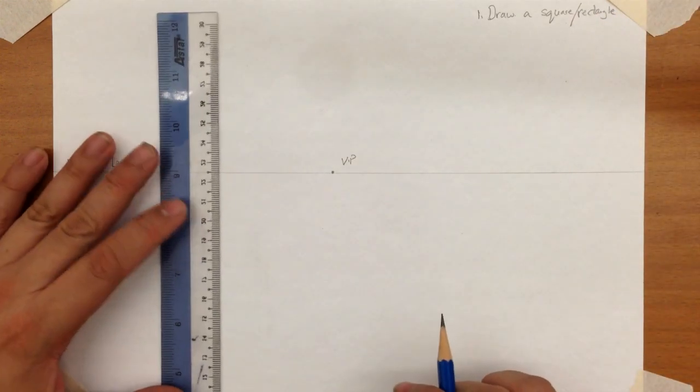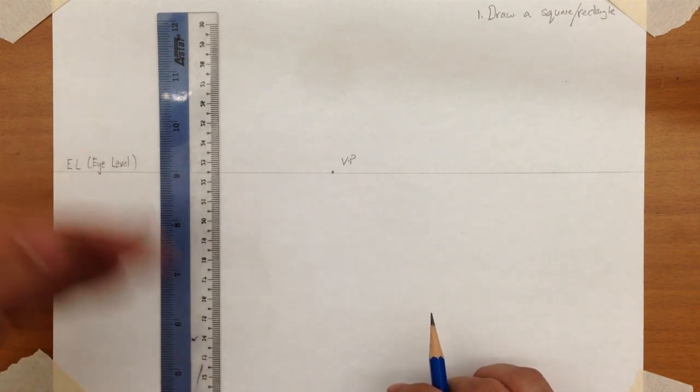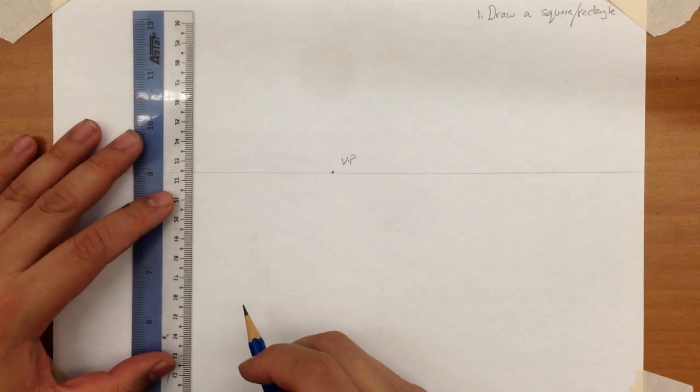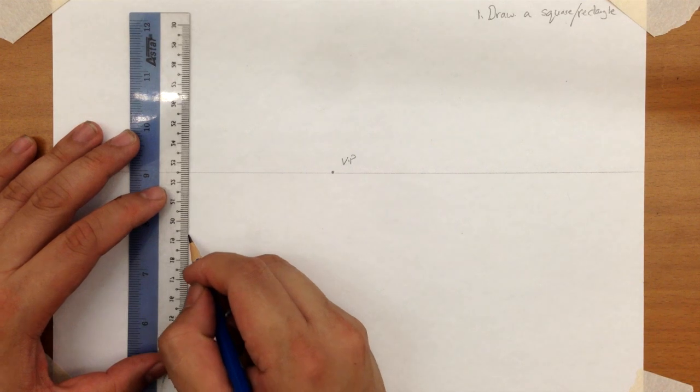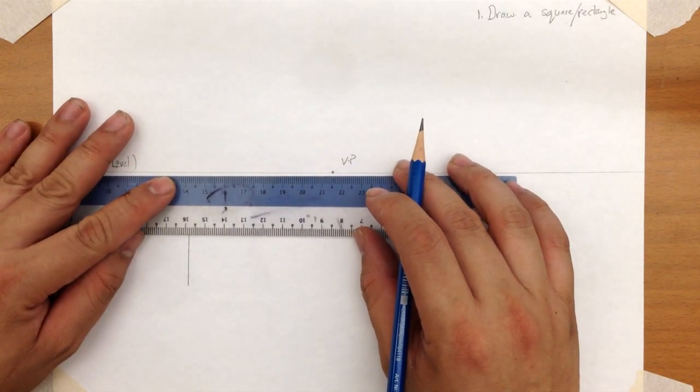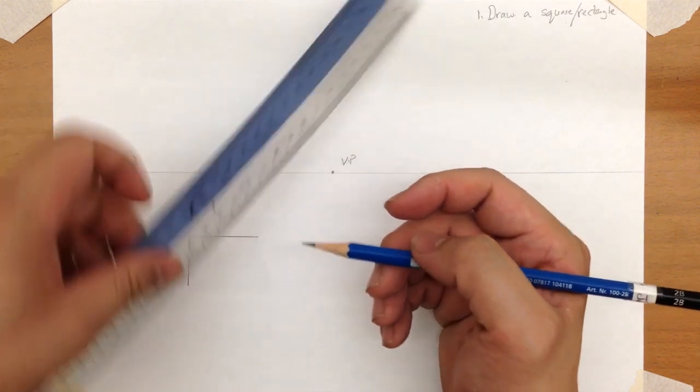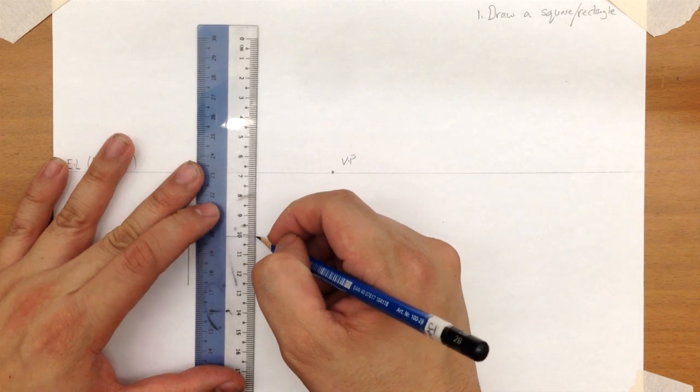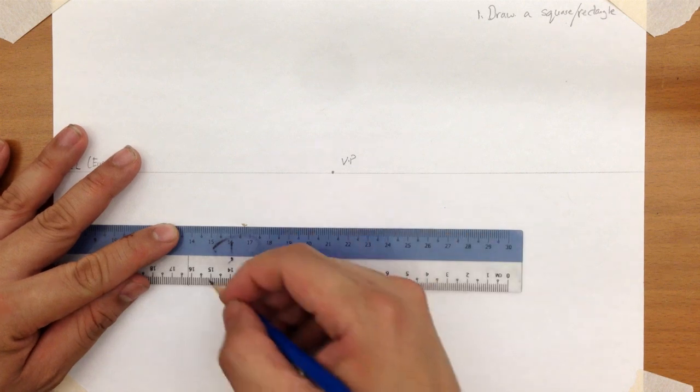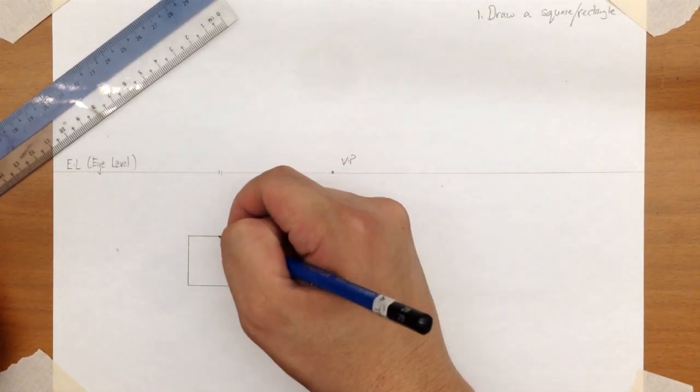So when you draw a square or rectangle, for example, let's say I'm going to draw a box that is below the eye level and on the left hand side. When you draw a square or rectangle, make sure that this is actually technically accurate. These lines should be parallel.